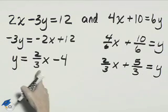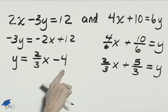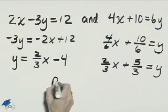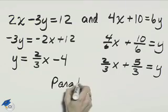Our slopes are 2 thirds for both of these equations, and their y-intercepts are different. That tells us that the slopes are the same, and these are parallel lines.